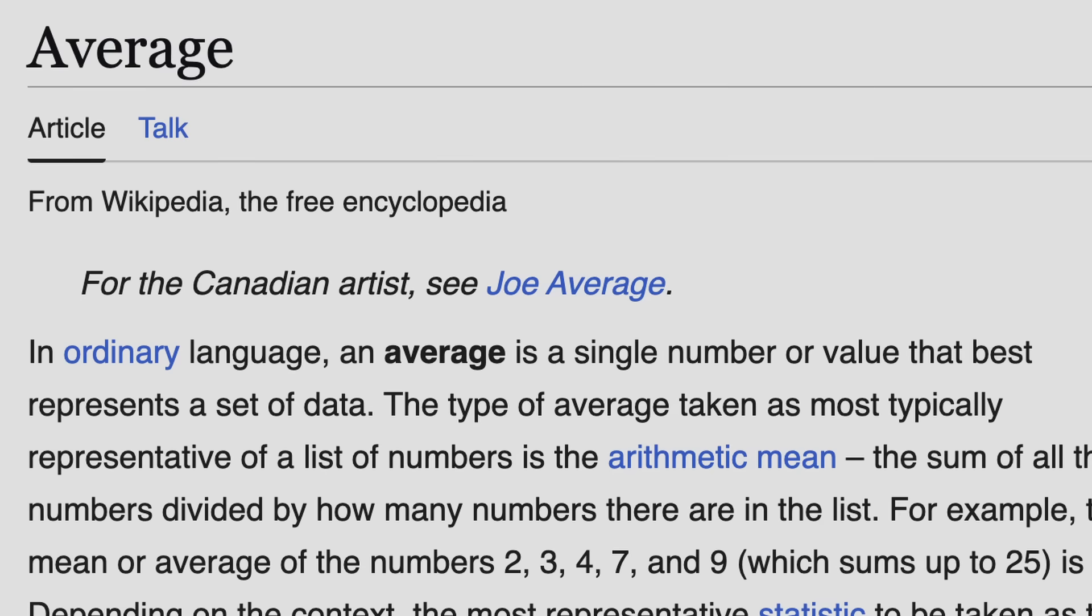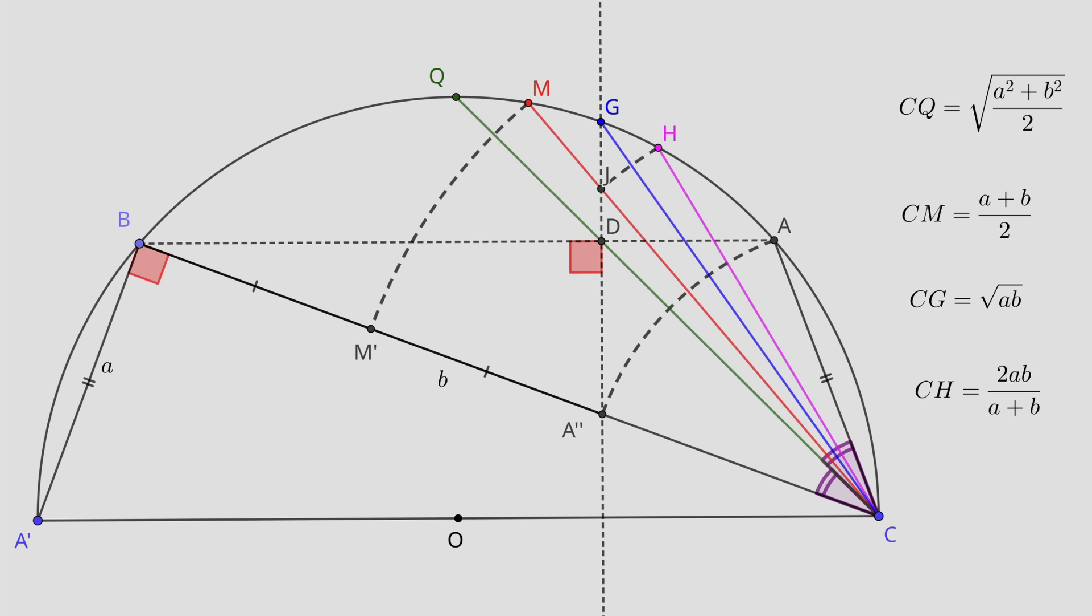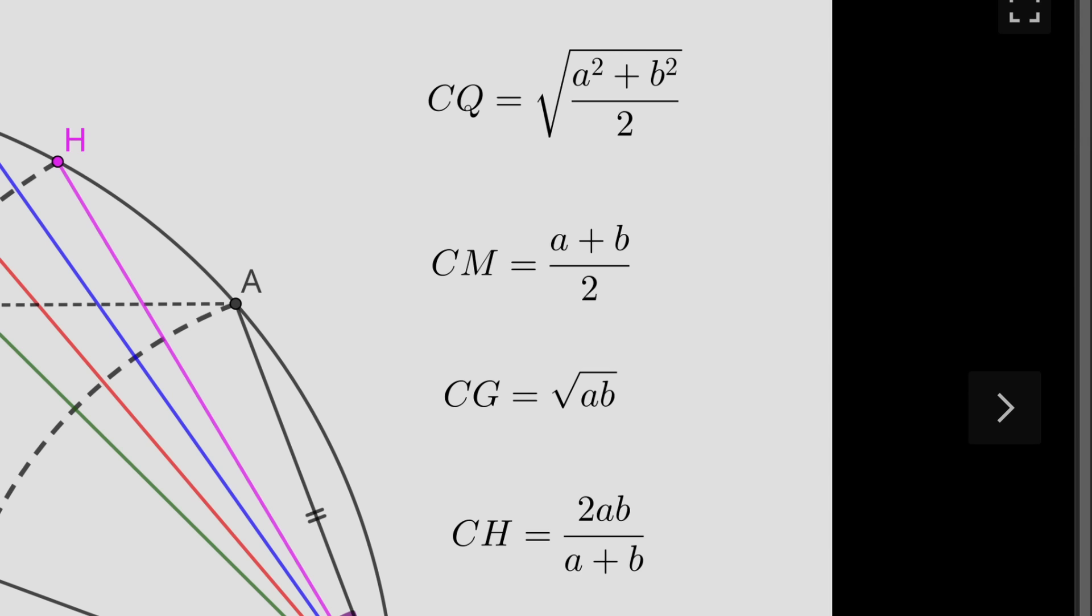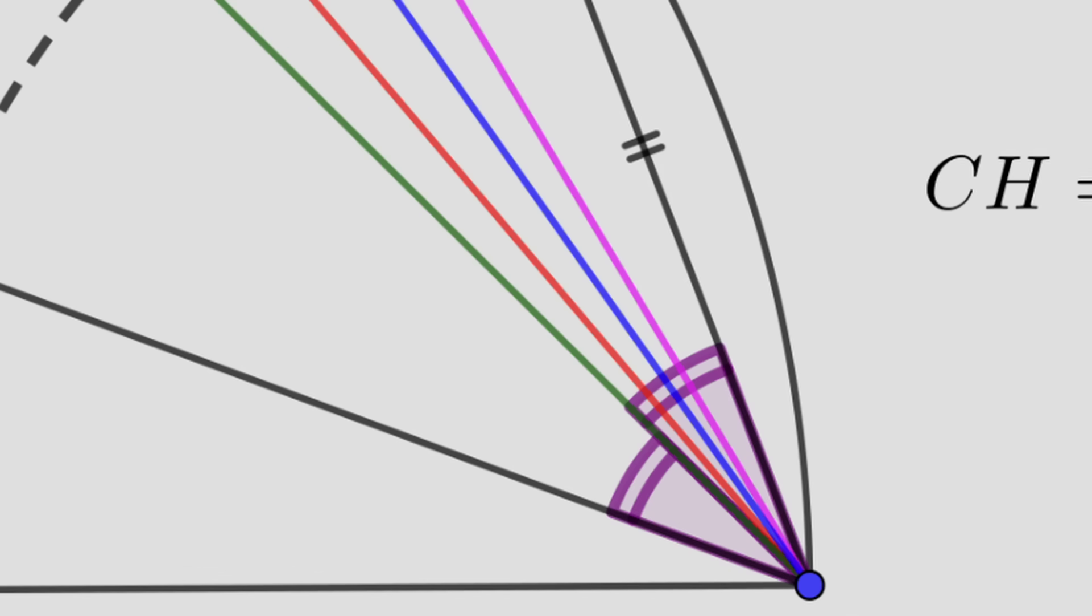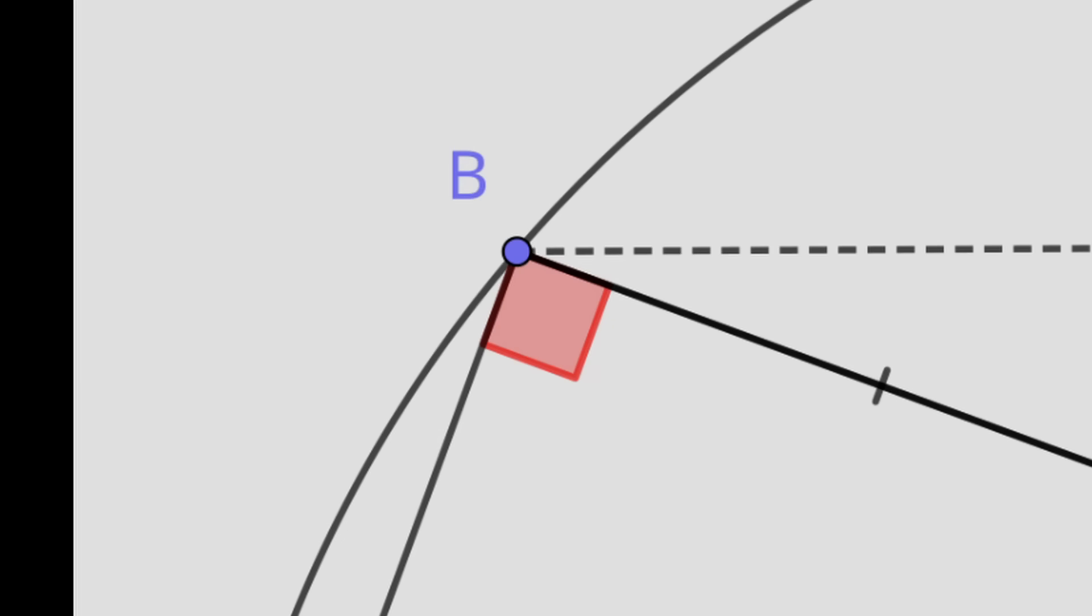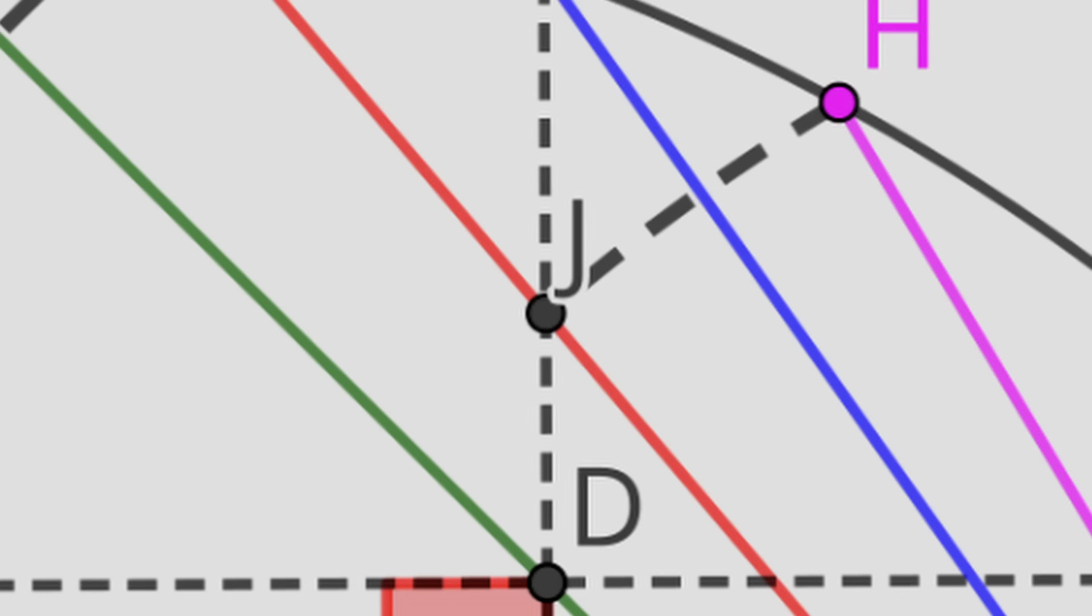In ordinary language, an average is a single number or value that best represents a set of data. Here's a picture to help you understand it: four means of two numbers, constructed as chords on a semicircle. None of the averages are given names. The lines are color-coded without also color-coding the averages they correspond to. There are these two random red squares that aren't explained at all.